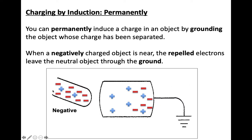So as we brought this negative object towards our neutral object, we had that induced charge separation. Electrons are going to move through the grounding to get to the ground.